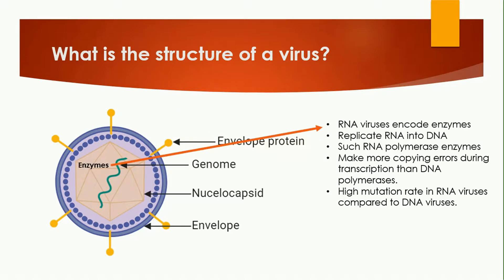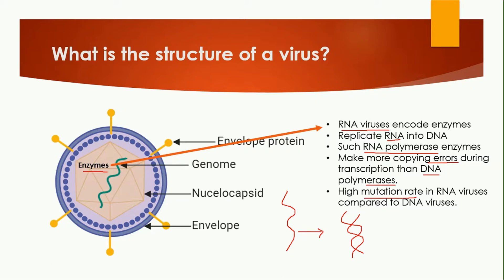The last part is enzymes. Inside the virus, specifically RNA viruses, enzymes are encoded. This is because RNA viruses need to convert their RNA into DNA. RNA is a single-stranded structure and needs to be converted into the more stable double-stranded DNA. For this purpose, the virus produces RNA polymerase, which converts RNA into DNA. However, RNA polymerase makes many more errors than DNA polymerase, which is why the mutation rate in viruses is very high.